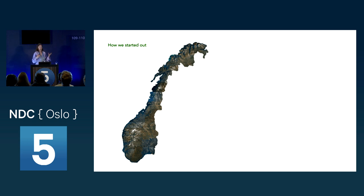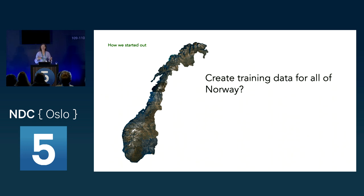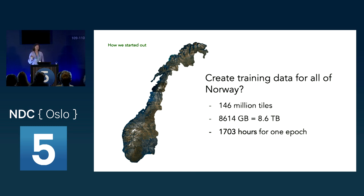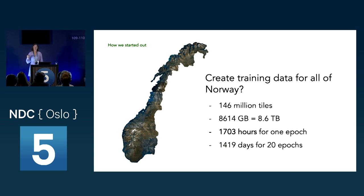We have aerial images and existing buildings for all of Norway, and we can create training data automatically. So why not create training data for all of Norway? That would give us 146 million tiles and 8.6 terabytes of data. On our training machine, it would take 1,703 hours for the machine to see all the data once. Running for 20 epochs would take 1,419 days — almost four years. So just taking all of Norway's data is a pretty bad idea.